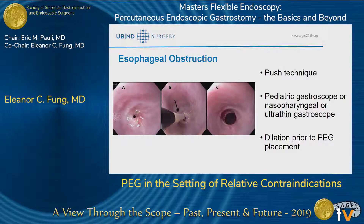Esophageal obstruction — I listed it as an absolute contraindication, but I wanted to go through a case. Sometimes you can circumvent it by using a pediatric gastroscope, a nasopharyngeal scope, or an ultra-thin gastroscope, which have a smaller diameter and can pass through the obstruction. You do have to be aware that the instrument channel of the nasopharyngeal scope is a lot smaller, so sometimes you can't pass a snare through it. In that scenario, I'll use the introducer Russell technique instead, so you're not causing extra trauma past the obstruction.